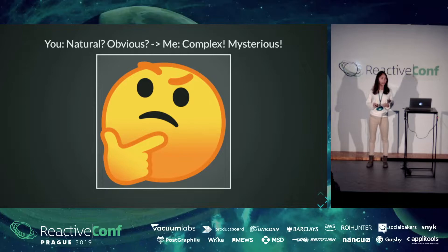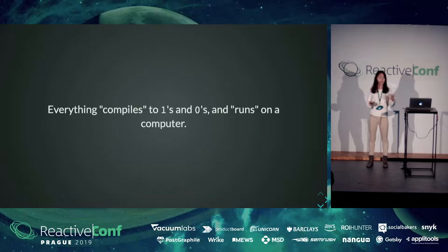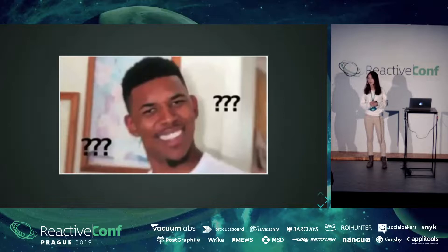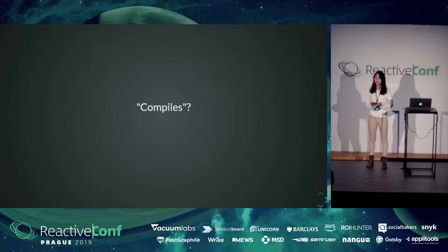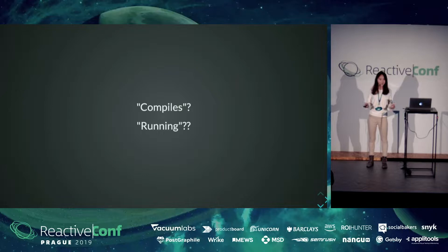A lot of things that might feel natural and obvious to you are some complex and mysterious problems for me. For example, while I was playing around with different languages, I realized everything eventually compiles to ones and zeros and runs on a computer. But wait a minute. What do we really mean when we say compile? And what are we referring to when we say a program is running on a computer? Does a program have legs or something? And all those small questions started to point to this bigger question.